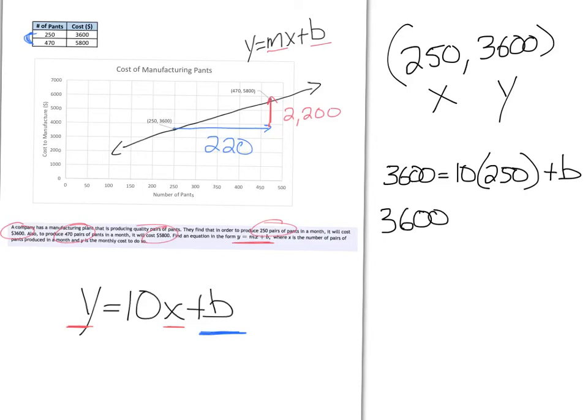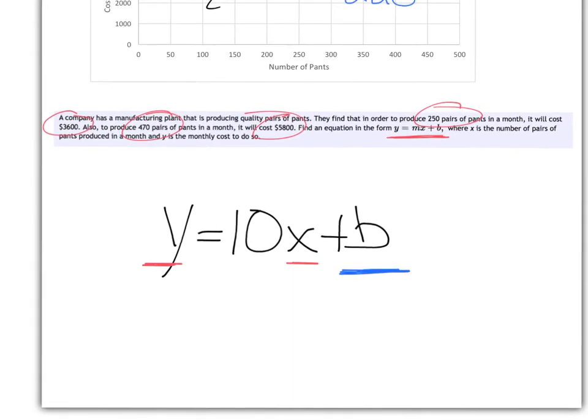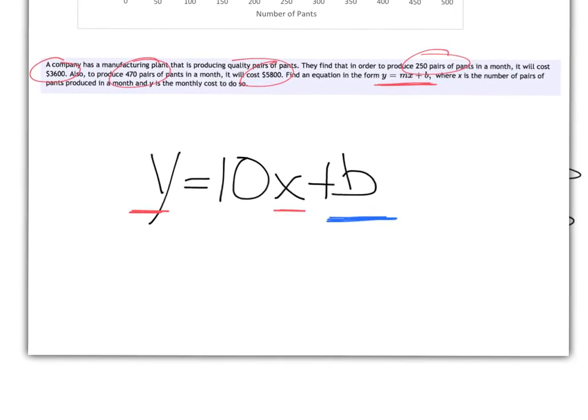And we are just going to solve this equation for B. We now have our B value. And we are going to plug that B value into our linear model to get a final linear model: Y equals 10X plus 1100.